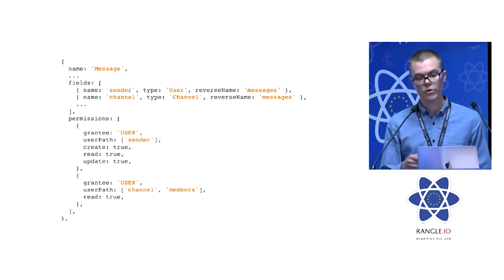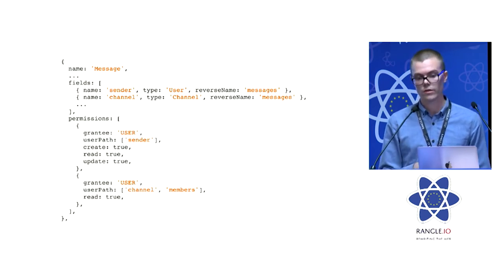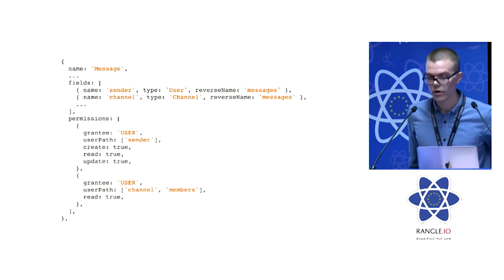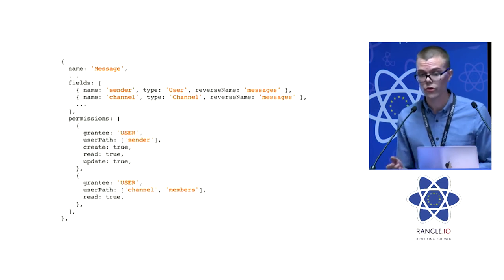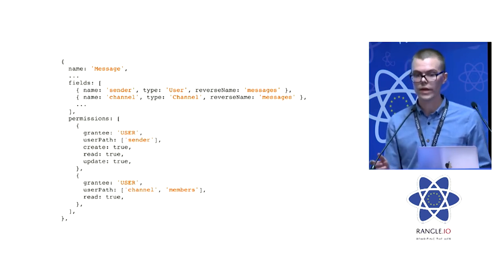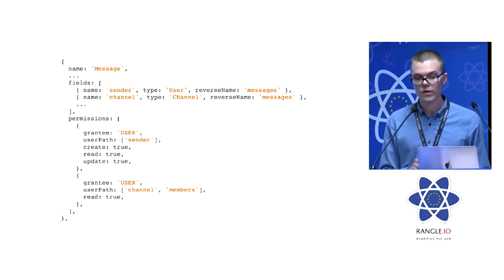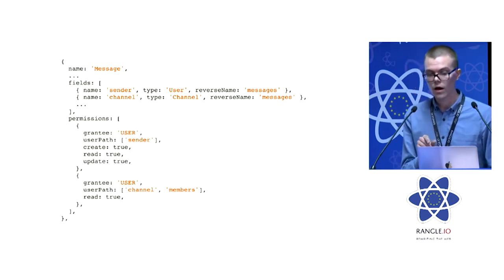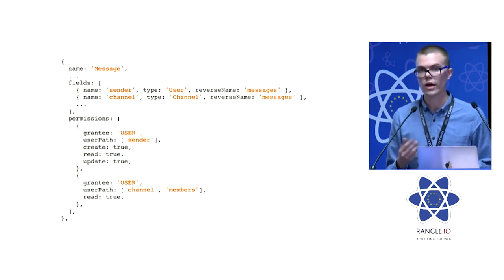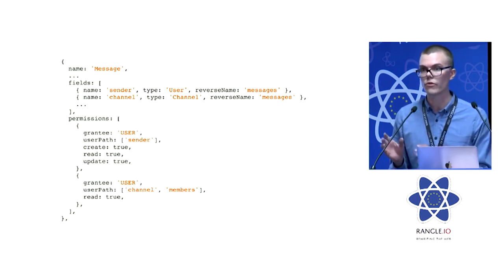For example, here is a message type from the schema. It has a sender field which is a user, and it also has a channel which is a reference to the channel the message was sent in. We can use this data to declaratively say that we want to give the sender of that message permission to create, read, and update that message — by just defining the name of the field and the permissions granted to the user referenced by that field.